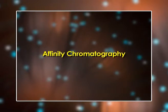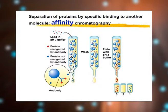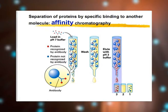Next, affinity chromatography: this uses a stationary phase contained in a column that consists of a ligand covalently bound to a solid support. The sample to be analyzed is passed through the column and the protein of interest binds to the ligand, whereas contaminating proteins pass directly through. The protein of interest is then eluted using a buffer solution which favours its desorption from the column.